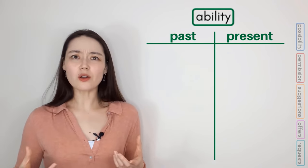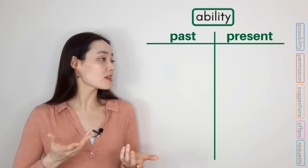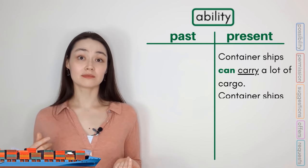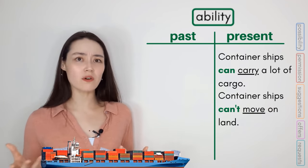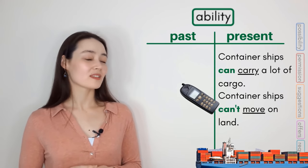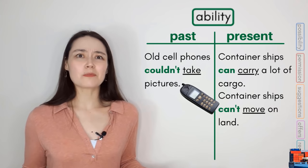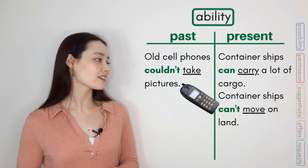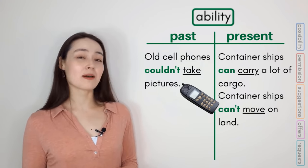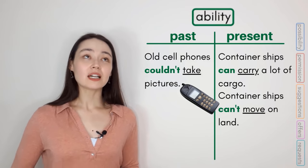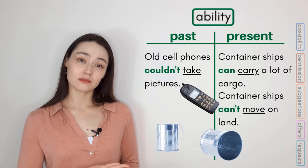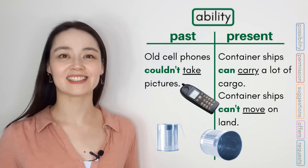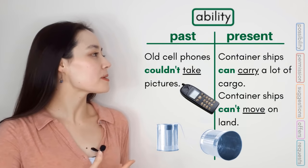Can and could are not only for people — we can use them for things as well. 'Container ships can carry a lot of cargo.' 'Container ships can't move on land.' 'Old cell phones couldn't take pictures' — I mean, they couldn't really do anything. And that looks like my first phone. Actually, this was my first phone. It was great — I never had any problems.